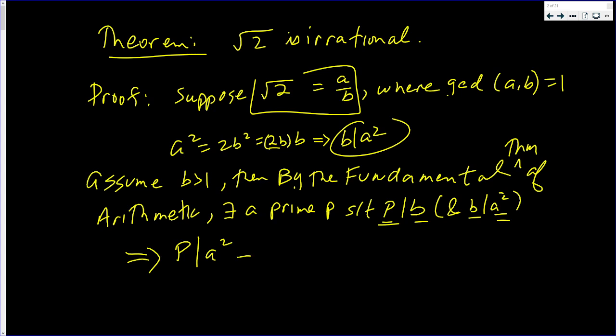But this is the same as p dividing a times a. And if p divides a product of two integers and p is prime, that implies p divides one of those two numbers. Well, they're the same numbers. That means p divides a.